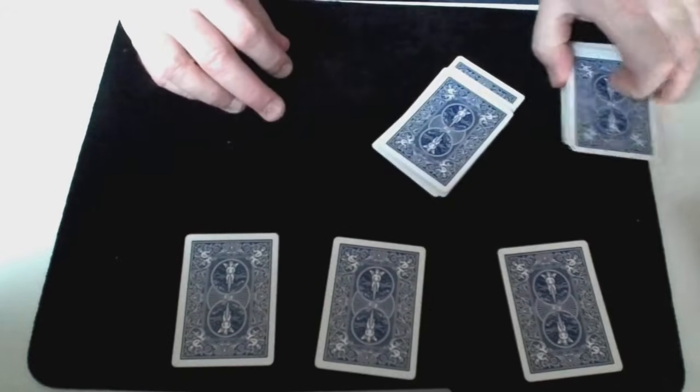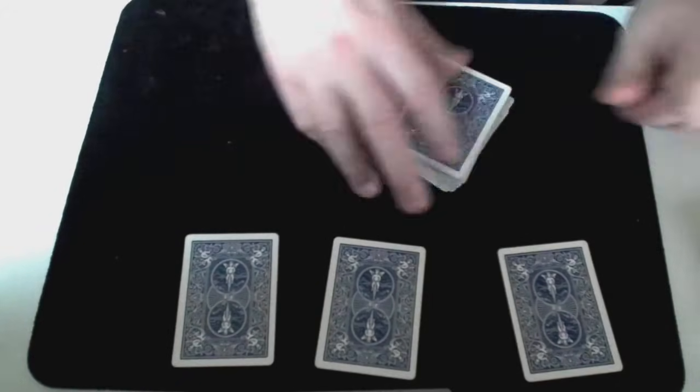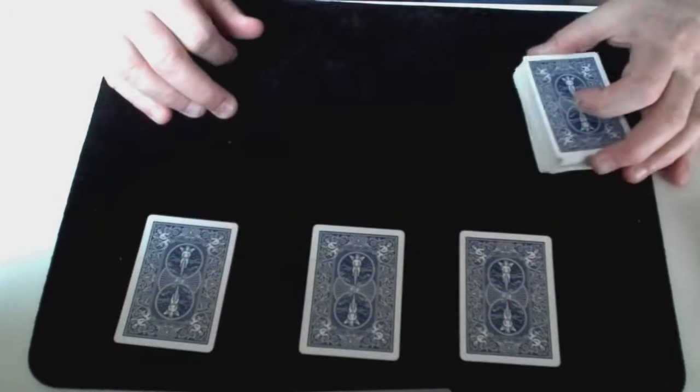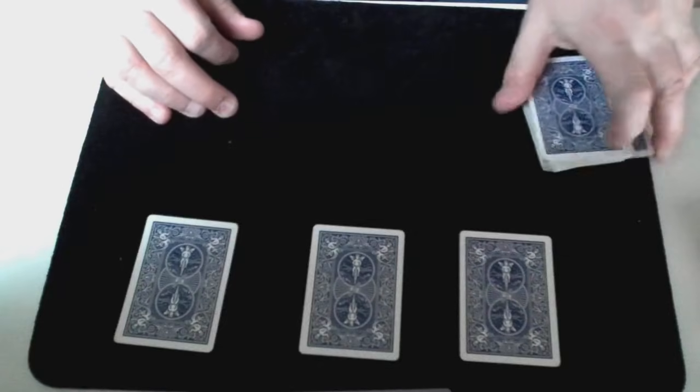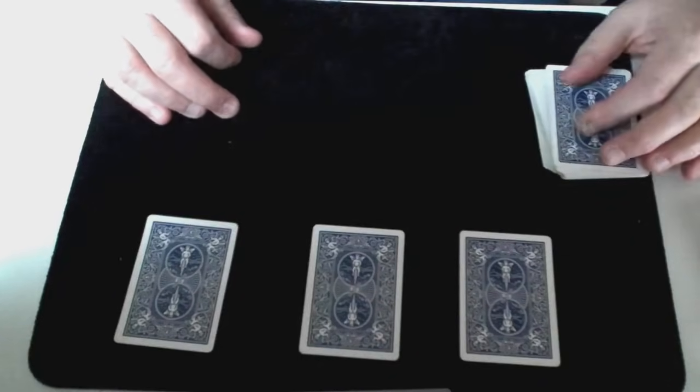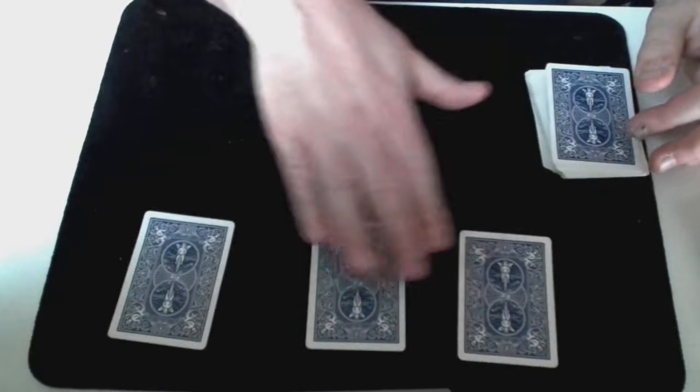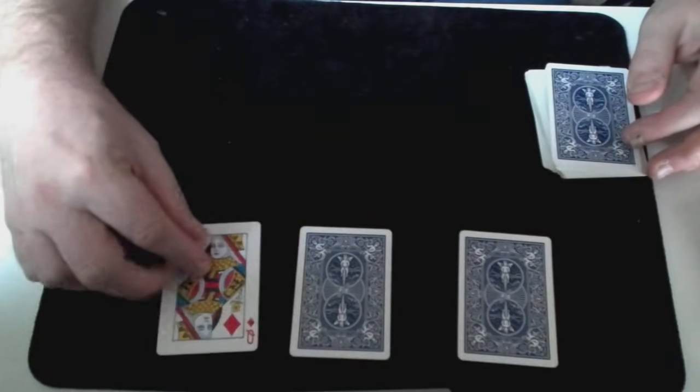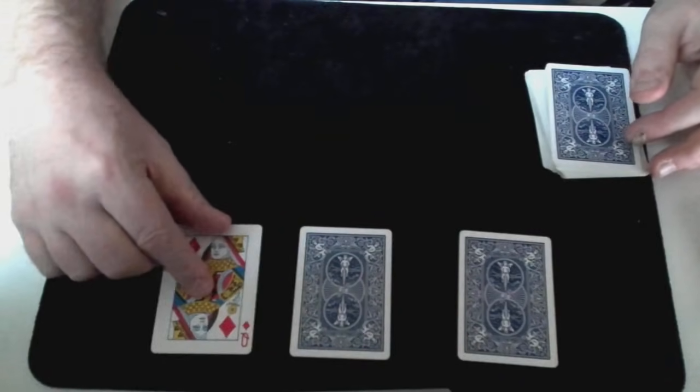Now again direct all attention back to the three chosen cards and build up the expectation that one of these cards is going to be the initially selected card. And you can then reveal these cards one at a time. And of course none of them will be the selected card.